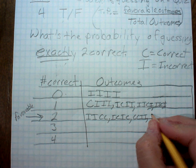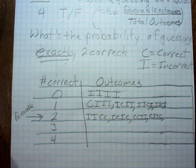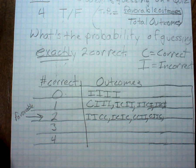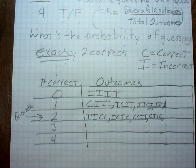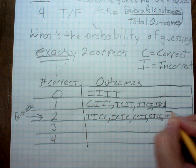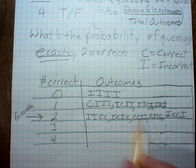I could get the first one correct and the last one incorrect, or the middle two correct — so incorrect, correct, correct, incorrect. I should have one, two, three, four, five combinations for two correct. You've got to think that through carefully.